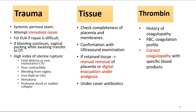If the cause is tissue, check the completeness of the placenta and membranes and confirm with an ultrasound. If retained tissue is confirmed, perform manual removal of placenta or digital evacuation under analgesia and cover with antibiotics. In rare cases where thrombin is the cause, correct the coagulopathy with specific blood products.